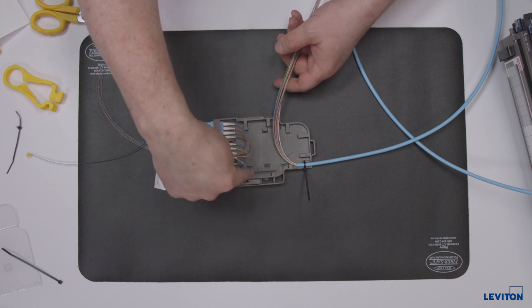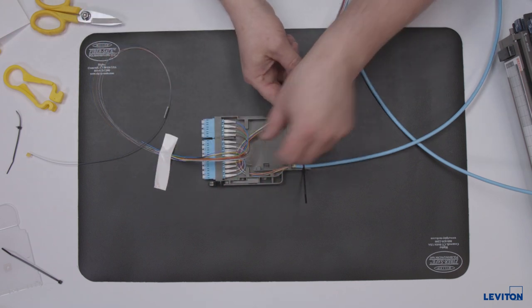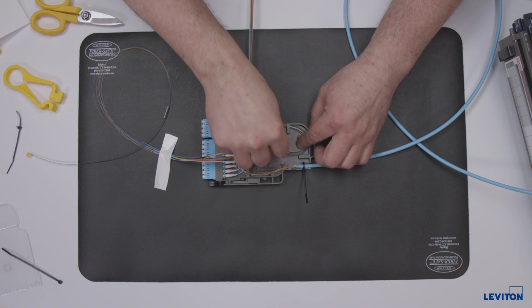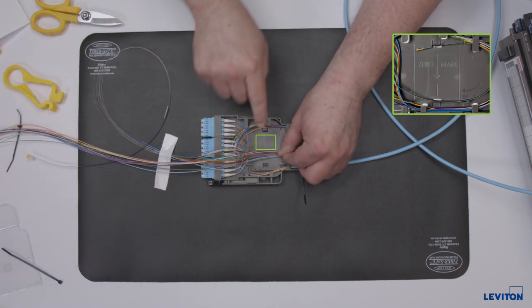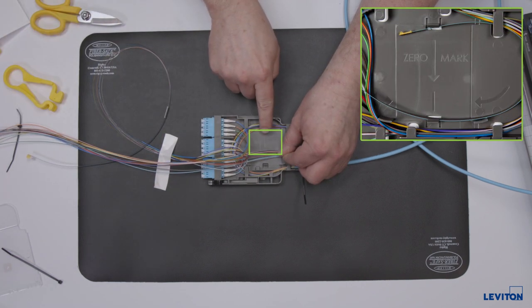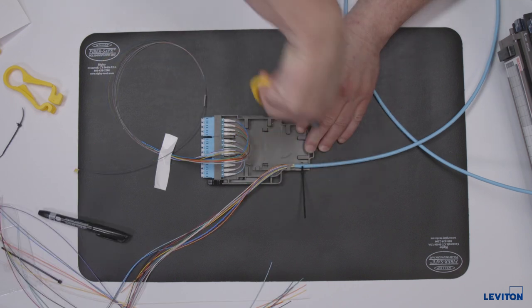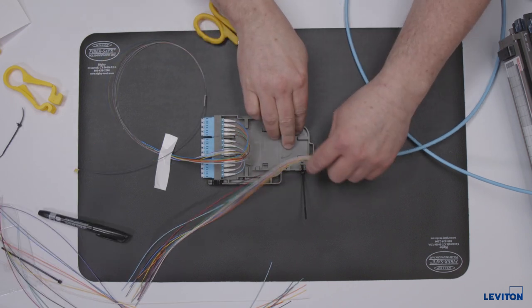Route the trunk fibers through the cable entry channel and around the module base clockwise one loop. Mark the fibers at the zero mark guide. Remove the tie wrap and remove all fibers from the module.